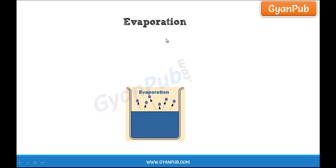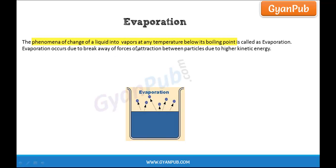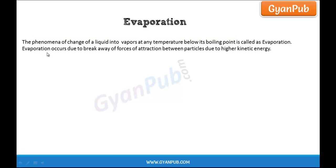The particles at the surface of the liquid are able to break away from the forces of attraction of other particles and get converted into vapor before the liquid reaches its boiling point. So we can say that evaporation is a phenomenon of change of a liquid into vapors at any temperature below its boiling point. Evaporation occurs due to the breaking away of forces of attraction between the particles due to higher kinetic energy.